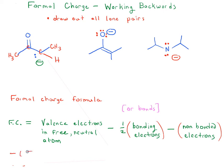Minus one is equal to five, which is the number of valence electrons we have in free neutral atom of nitrogen. Minus one half times two. So minus one essential. Oh, sorry. We have four bonding electrons. So minus one half times four minus the number of non-bonded electrons, which is four.